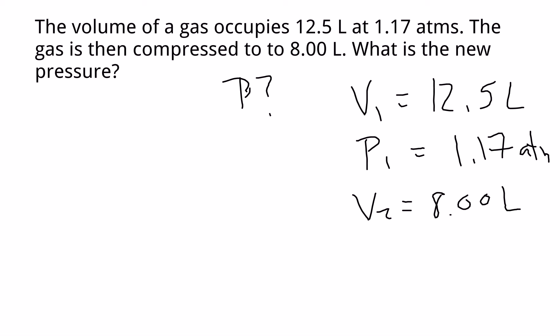So the way I would set it up is P1 V1 equals P2 V2, where I'm going to solve for P2. So if we write that out over here, I would get 1.17, and that 1.17 is in ATMs.